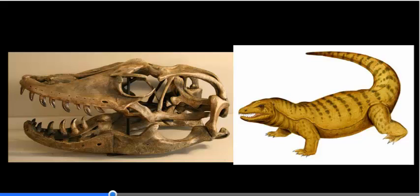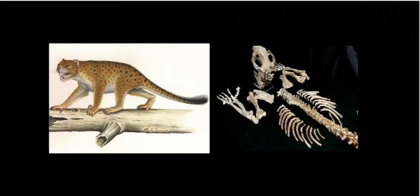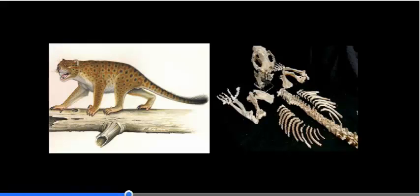We also see Thylacoleo, the marsupial lion, which was a marsupial carnivore present in Australia. There would have been a whole range of carnivorous organisms, including relatives of the thylacine — the Tasmanian tiger — and Tasmanian devils, filling the niches for carnivorous mammals, but still marsupials.